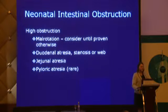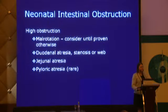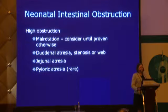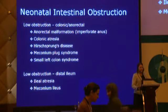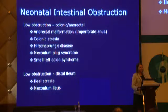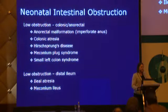Neonatal intestinal obstruction is divided into high and low obstruction. High obstructions — in the upper abdomen — include malrotation, which is a diagnosis of exclusion and should be considered in any child presenting with bilious vomiting. Duodenal atresia, stenosis, or web usually present in the immediate neonatal period but can present later. Low obstructions are colonic or anorectal: anorectal malformations, colonic atresia, Hirschsprung's, meconium plug, and small left colon. Other low obstructions involve the distal ileum — ileal atresia, complete obstruction, and meconium ileus, which is a relative obstruction.